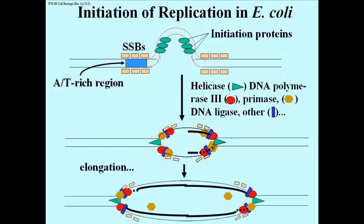Once elongation is underway, these replication enzyme complexes move away from the origin of replication in both directions.